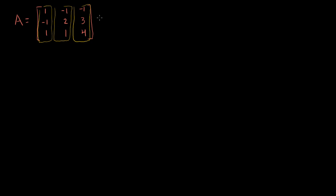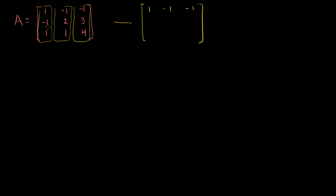If we want to put A into reduced row echelon form, the first step we might want to do — if we want to zero out these entries right here — is we'll keep our first entry the same. So for each of these column vectors, we're going to keep the first entry the same. So they're going to be 1, minus 1, minus 1. Let me simultaneously construct my transformation.